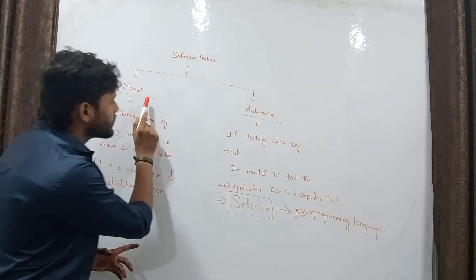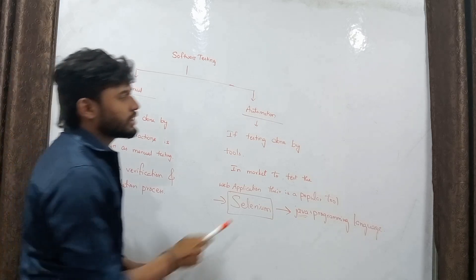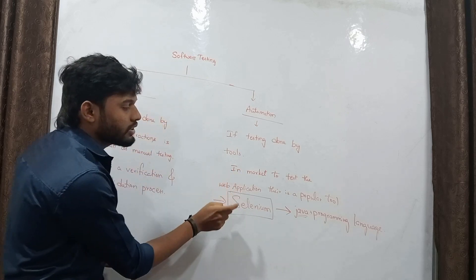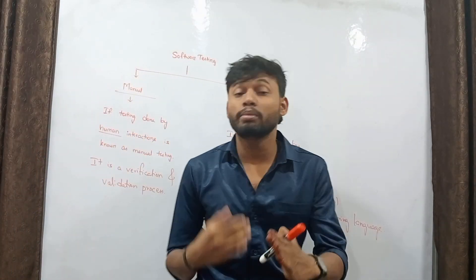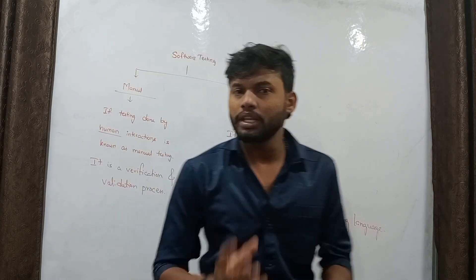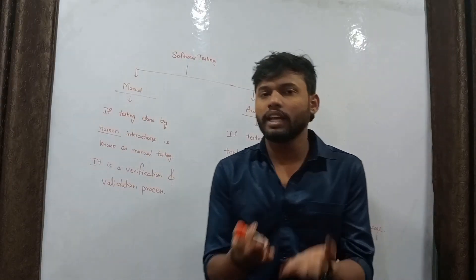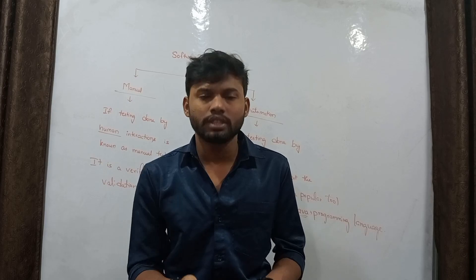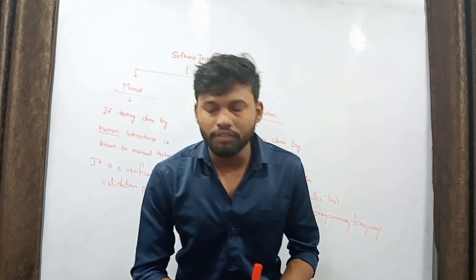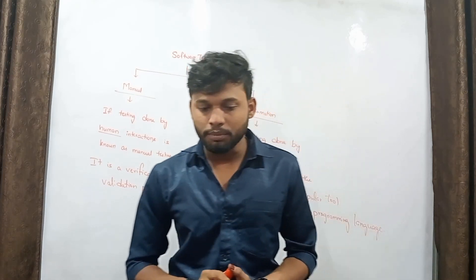So to summarize: software testing is divided into two types — manual and automation. Manual is testing done by human interaction; automation is testing done by tools. In the market we use the Selenium tool operated with Java programming language. I hope you understand the basics of software testing. Please give your support in the comment box, mention any new topics you'd like, and we are ready to provide tutorials. Thank you for supporting SP Global — keep supporting!